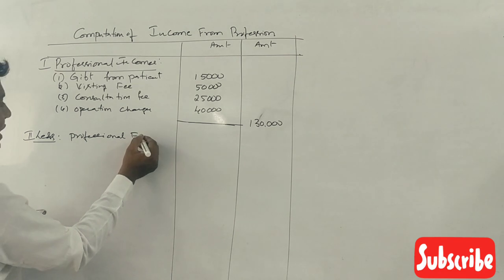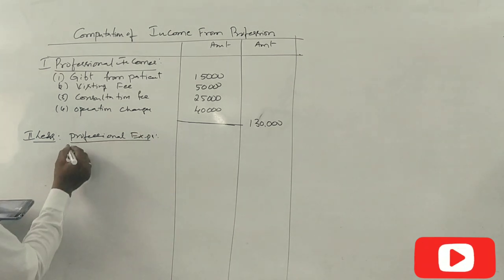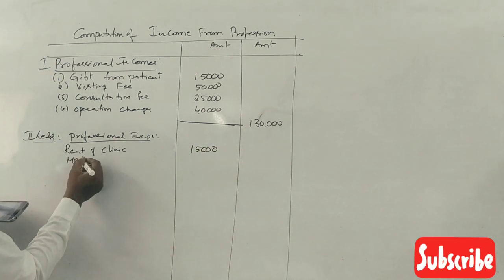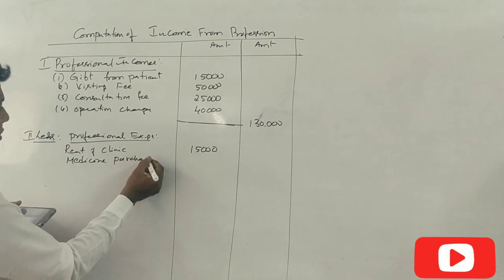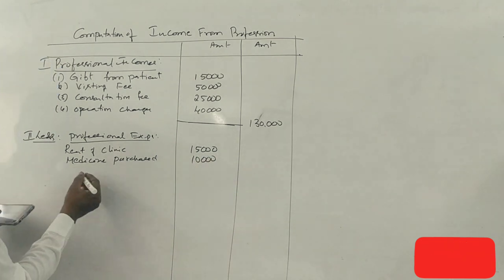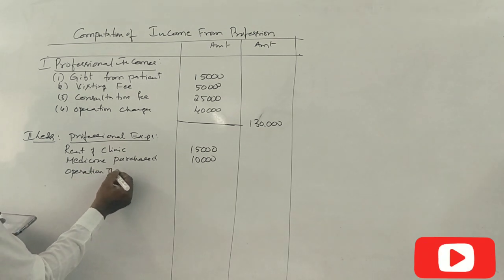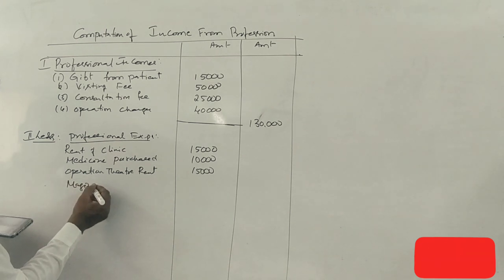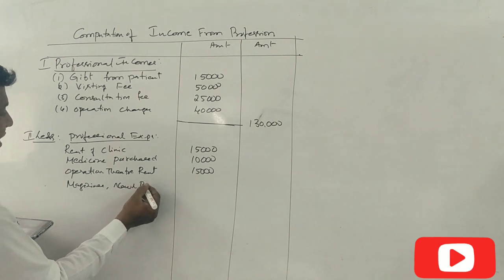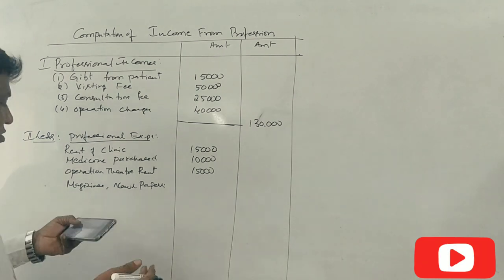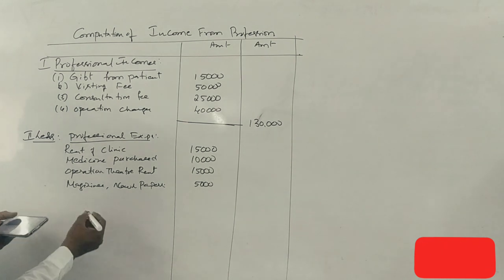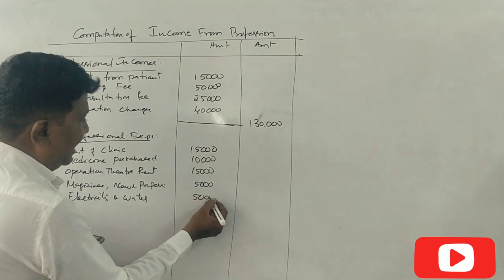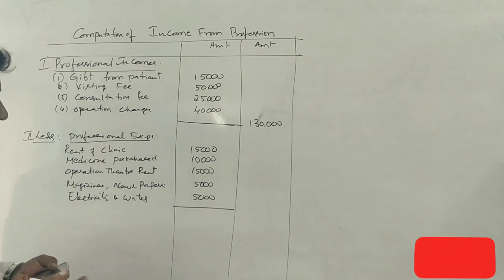Professional expenses: rent of clinic — 15,000; medicine purchased — 10,000; operation theatre rent — 15,000. Magazines and newspapers in the hospital reception are professional expenses. Electricity and water charges are also professional expenses — 5,000. Television purchase for residence is not a professional expense.